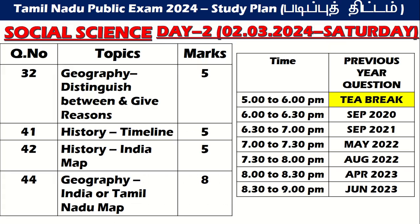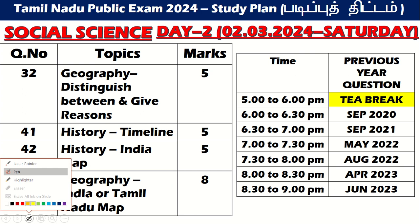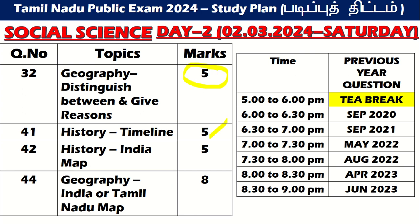Day 2 Part 4. In this video you will see geography — distinguish between and give reasons. History map and geography map together amount to 5 marks each. So if you start a map here for 5 marks, that comes to 23 marks total for this entire video. Please make note of that and read accordingly. You will easily get these marks.